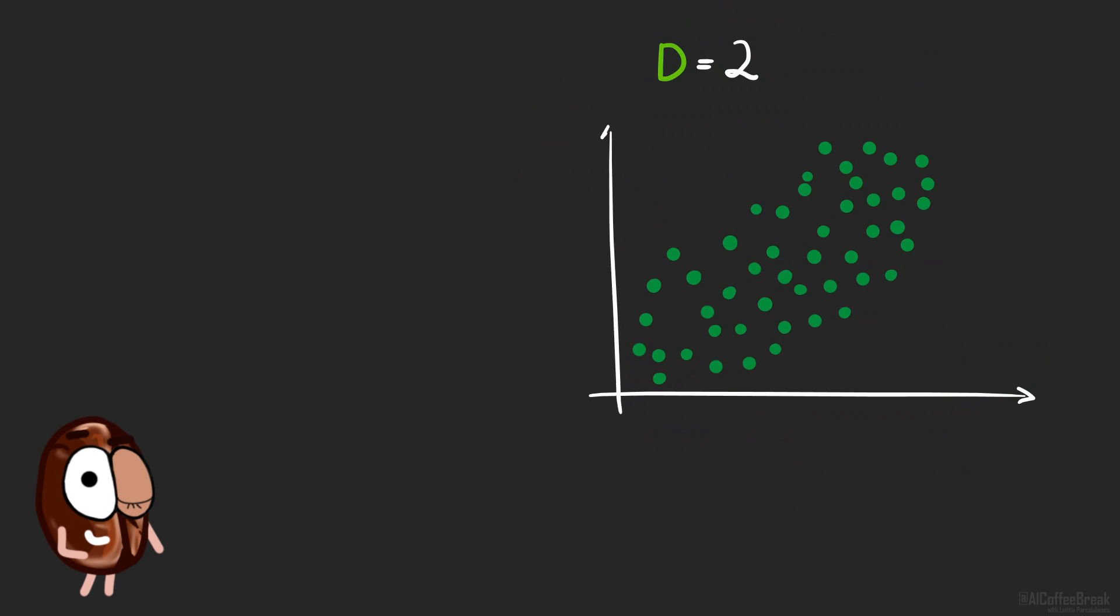With math, of course. But first, let's think about this intuitively. What if we would approximate our data with an ellipse, basically a two-dimensional Gaussian, and find out the main axis of the ellipse?